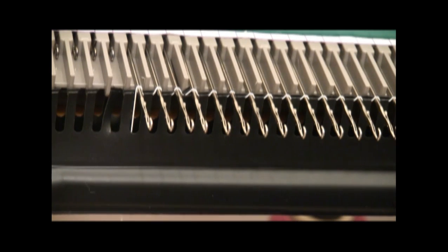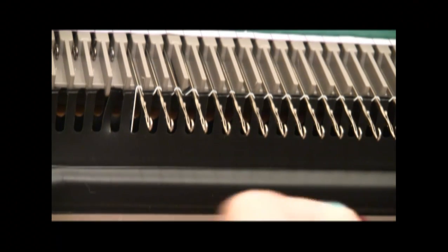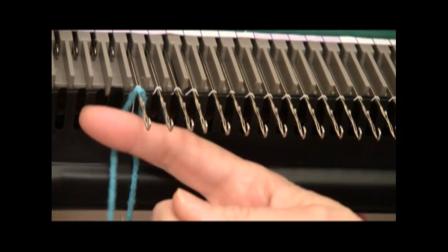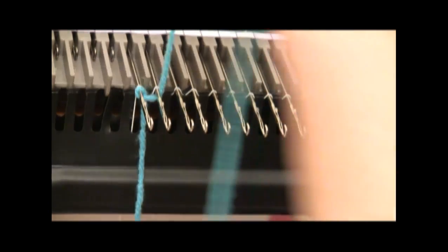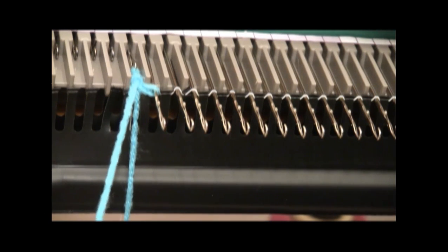I'm going to use a double e-wrap cast-on, so I have my yarn with a clothespin hanging. This is a good worsted weight yarn, and I go around the first needle, and then come up between the first and second needles. Then bring the yarn back, and knit it through the first needle.